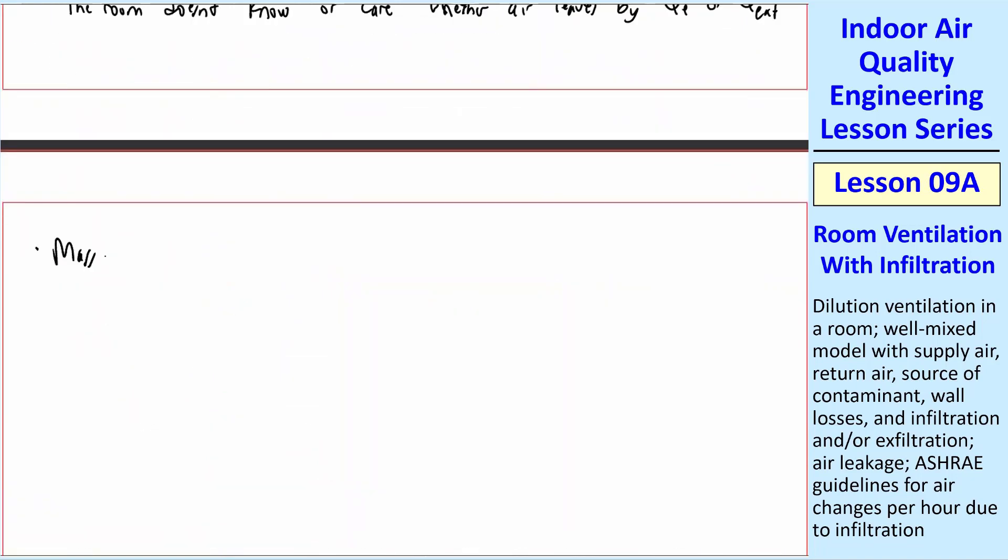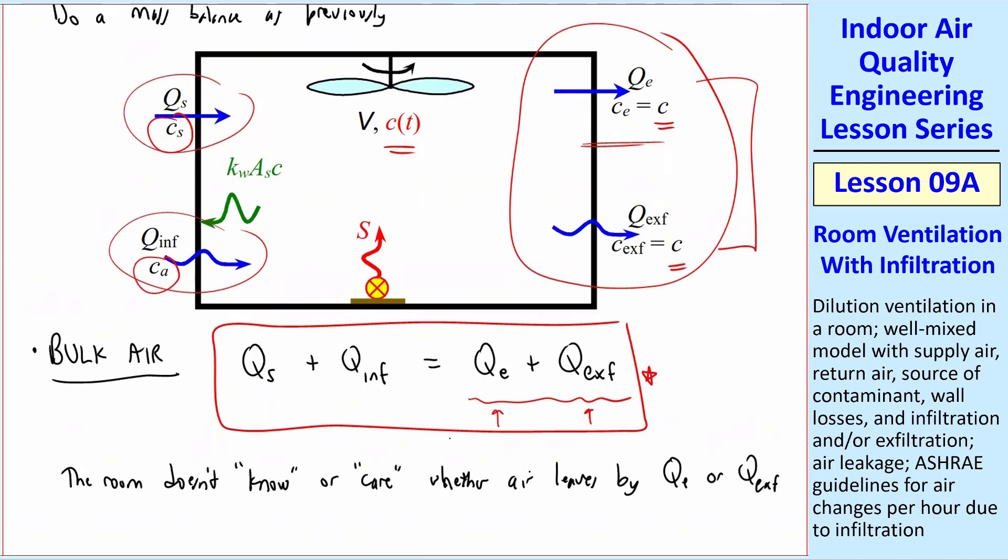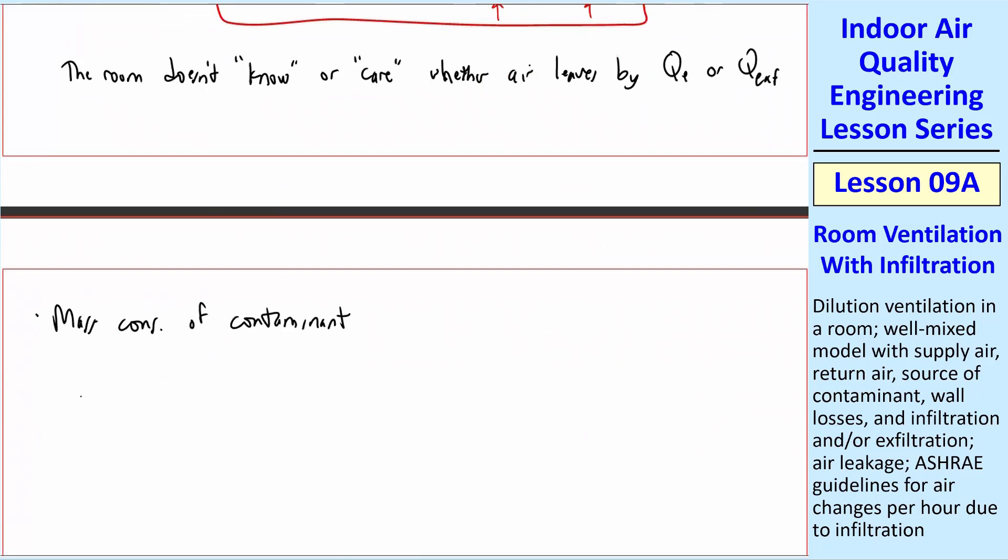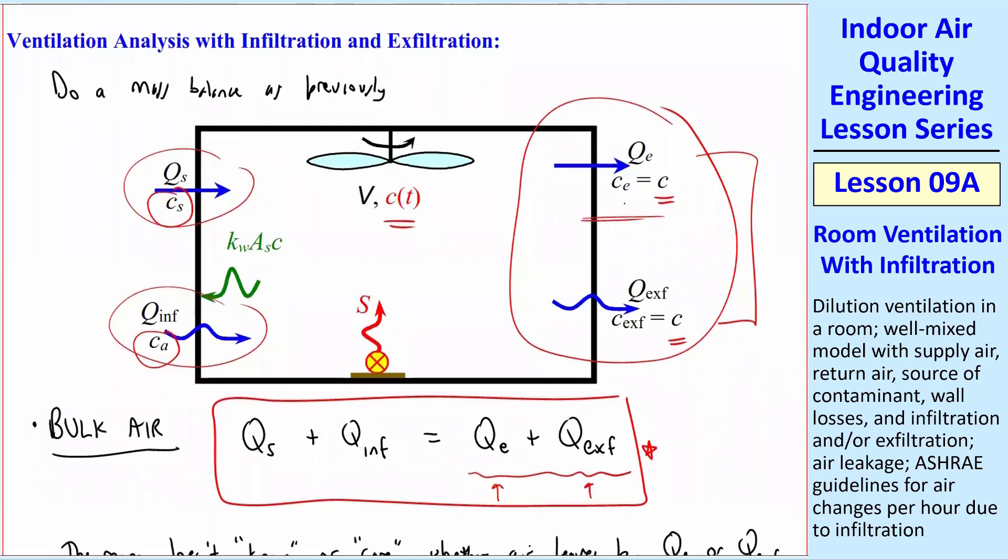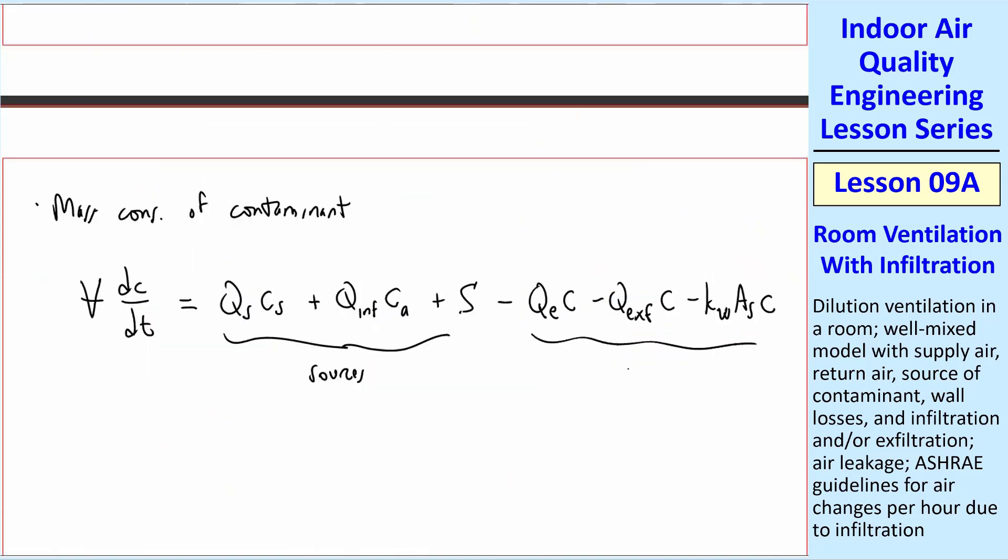Let's look at the mass conservation of the contaminant. What do we have coming in? We have Q_S times C_S, a Q_INF times C_A here, and we have a source. So we can start constructing our conservation equation as follows. V dC/dt is Q_S C_S plus Q_INFILTRATION C_A plus source. These are all sources. And then we'll subtract all the things that are coming out. Q_E times C_E and Q_EXF times C_EXF and the wall losses. So these are all sinks.